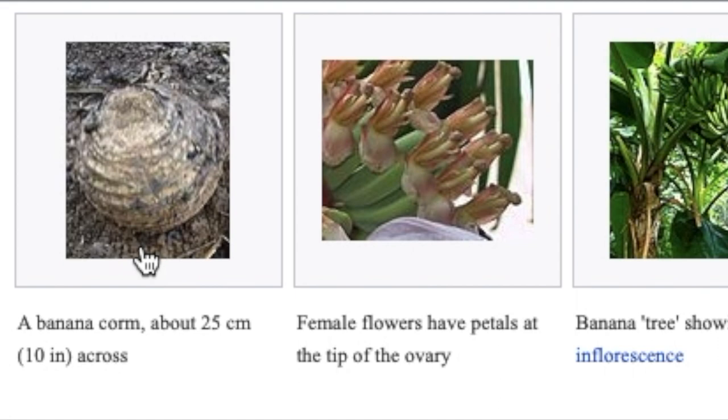The term banana can extend to other members of the genus Musa, such as the scarlet banana, Musa coccinea, the pink banana, Musa velutina, and the Fei bananas. It can also refer to members of the genus Ensete, such as the snow banana, Ensete glaucum, and the economically important false banana, Ensete ventricosum. Both genera are in the banana family, Musaceae. Here you can see a banana corm about 25 centimeters or 10 inches across.